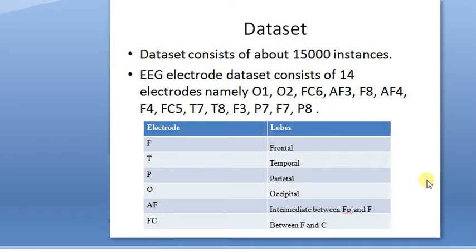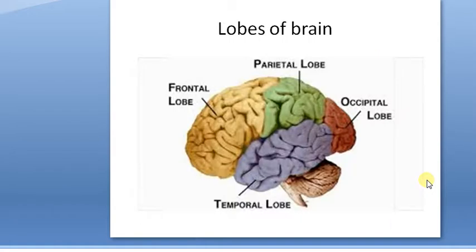The right has a set of different four lobes and the left has a set of different four lobes. The AF is the intermediator between FP and F, and FC is between the frontal and central part. These are the lobes of the brain: frontal, parietal, occipital and temporal. The part of the brain which is responsible for our vision is the occipital. This is the part where whatever our eye captures is actually interpreted so that our brains understand and we can know what is happening.